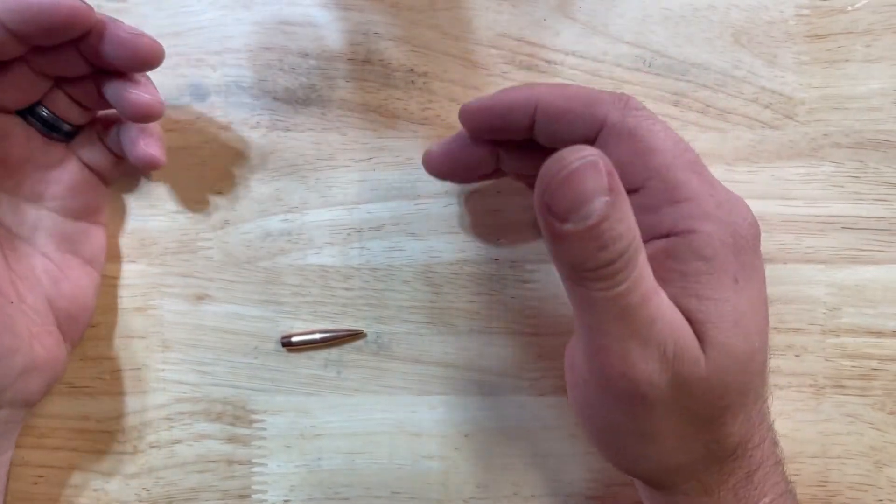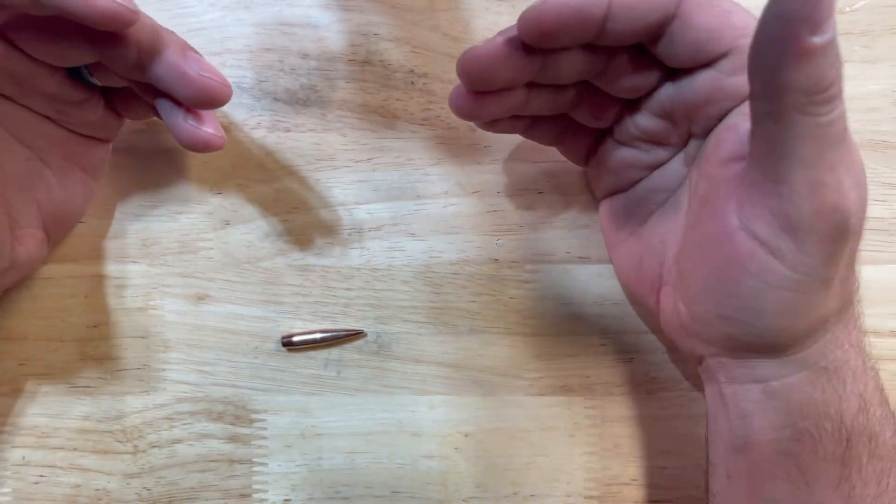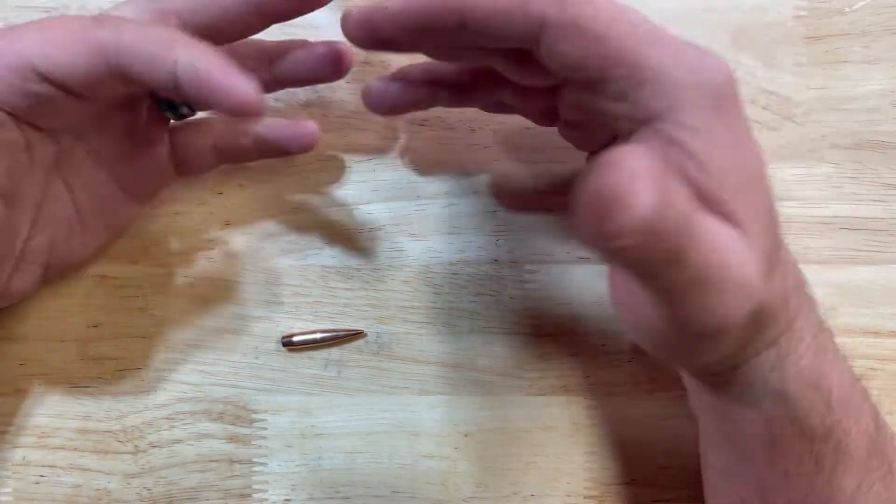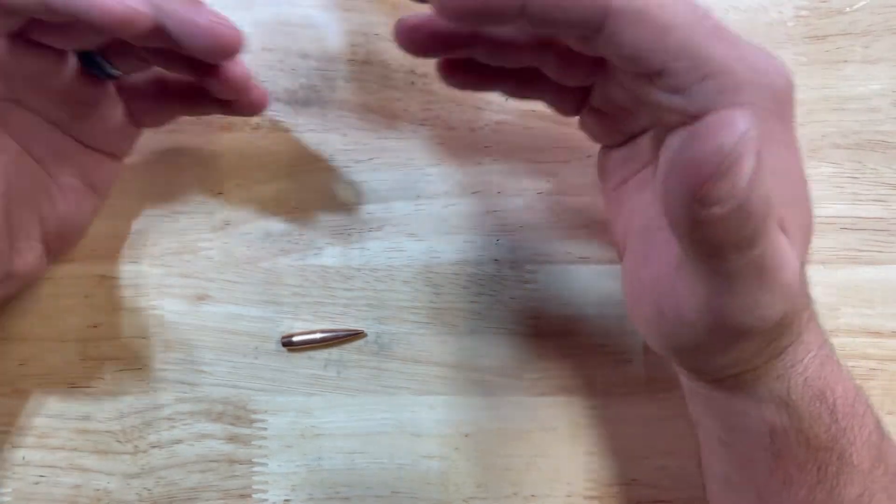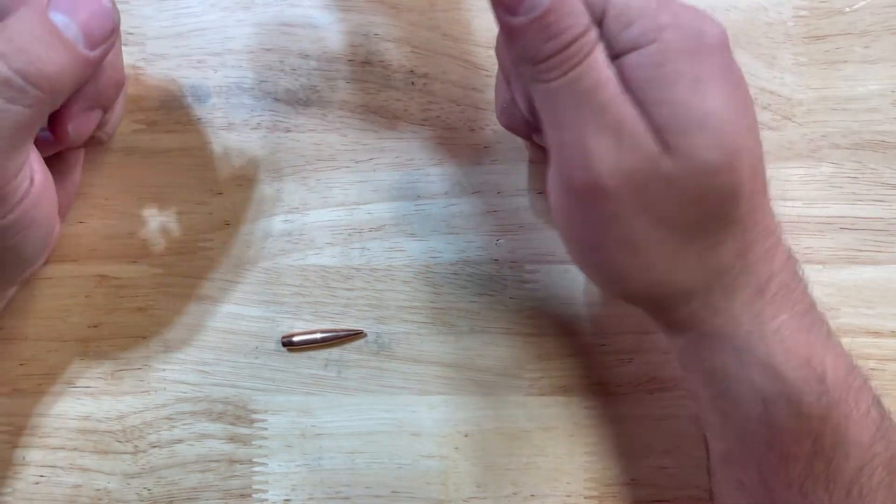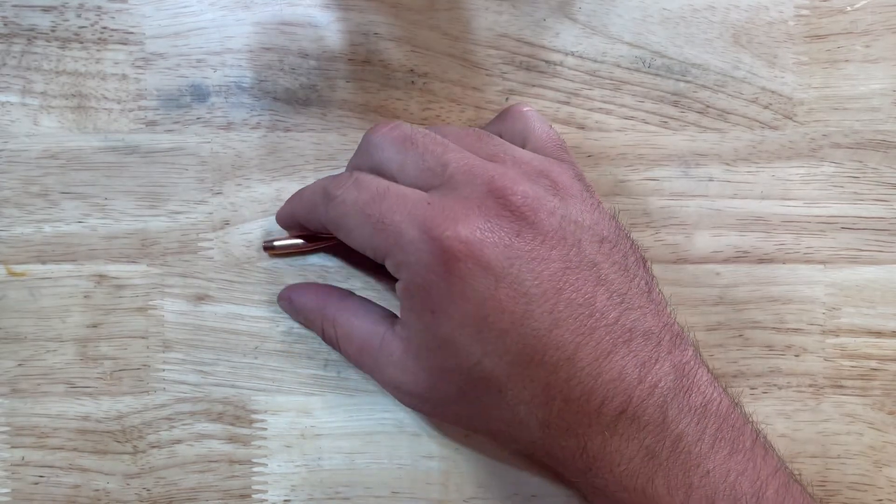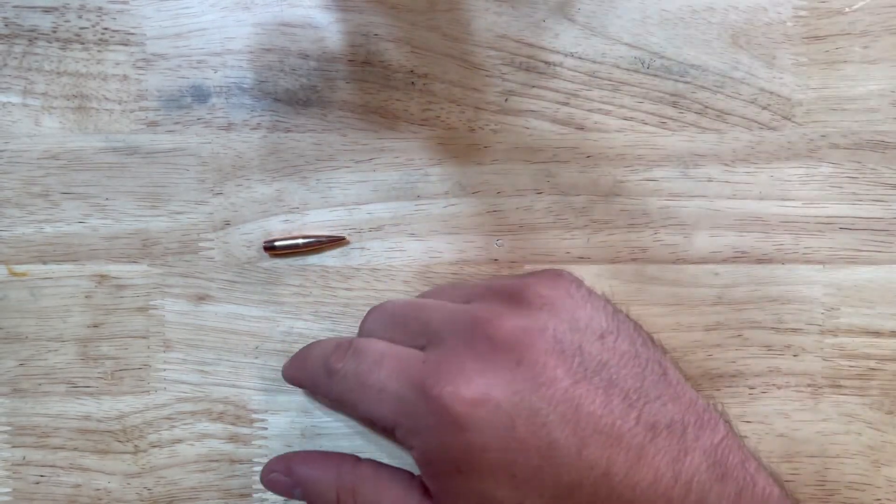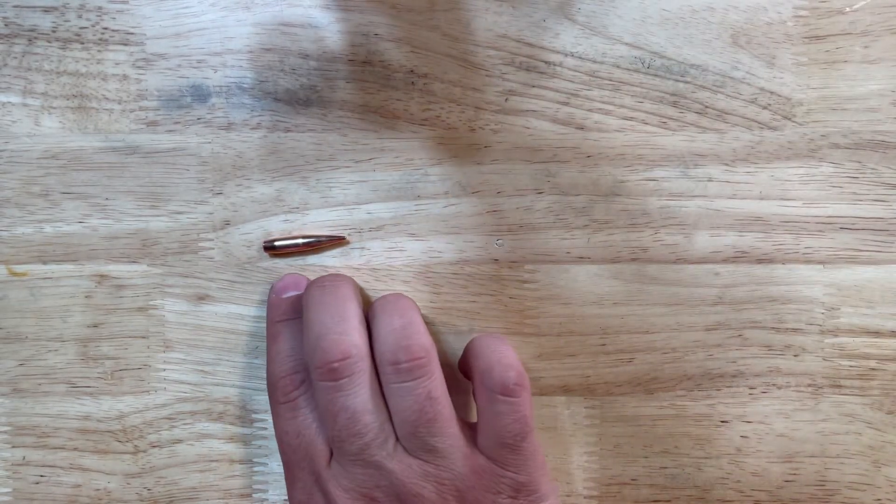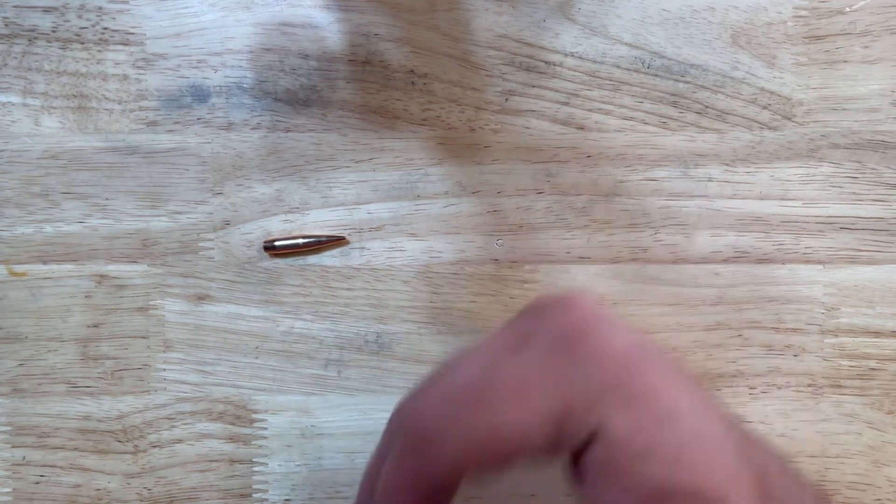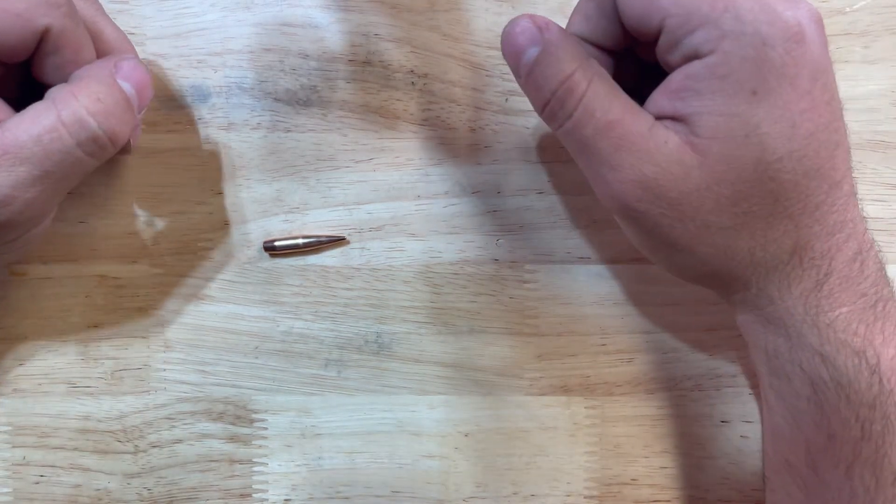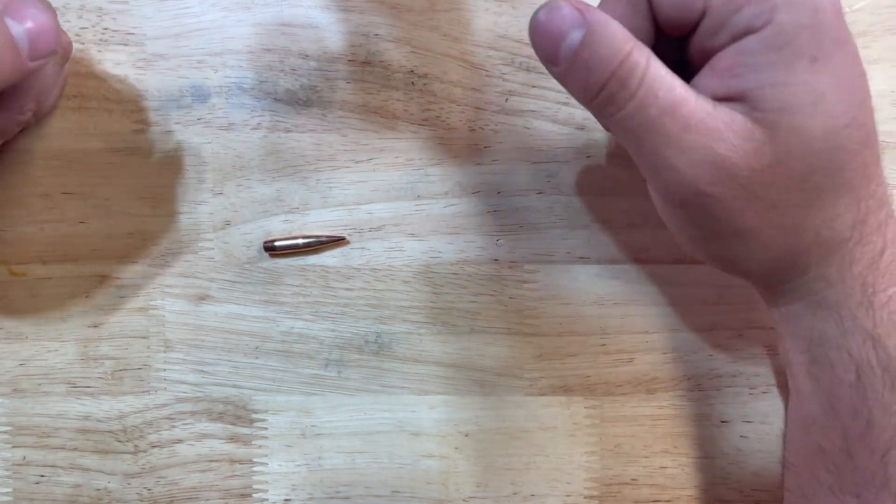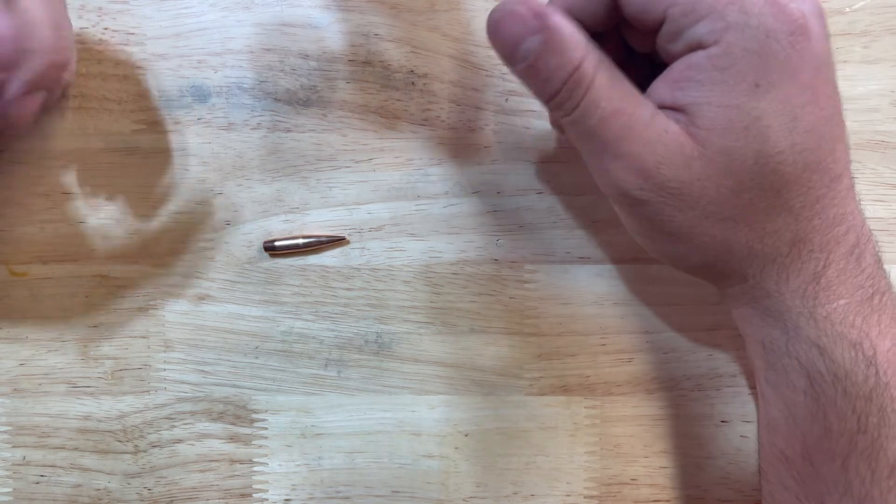So a few things to quickly note: the main factors for required spin to stabilize a bullet is going to be a factor of bullet length, which corresponds to weight. Because the diameter of a bullet is going to be fixed based on the caliber, the only way to increase weight is by essentially increasing the length of the projectile. So the length of the projectile is what is going to affect essentially the required twist rate to stabilize the bullet.